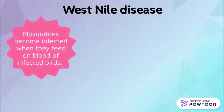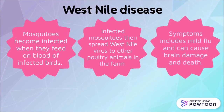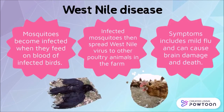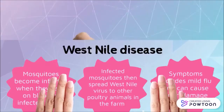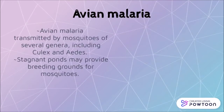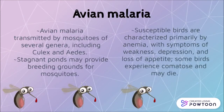West Nile disease is another disease that can be transmitted by infected mosquitoes to other poultry animals in the farm. The symptoms of West Nile disease include mild flu and can cause brain damage and death. Now on to avian malaria. This disease can be transmitted by mosquitoes of several genera including Aedes. Stagnant ponds are the breeding grounds for the mosquitoes. Susceptible birds are characterized primarily by anemia with symptoms of weakness, depression, and many more.